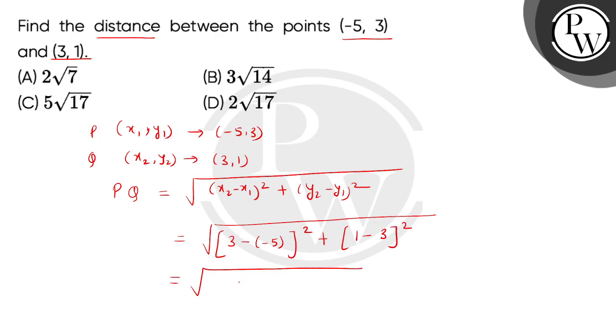So 3 plus 5 is 8. 8 squared means 64 plus. This is 1 minus 3 means minus 2. So minus 2 squared will be 4. So this becomes square root of 68.